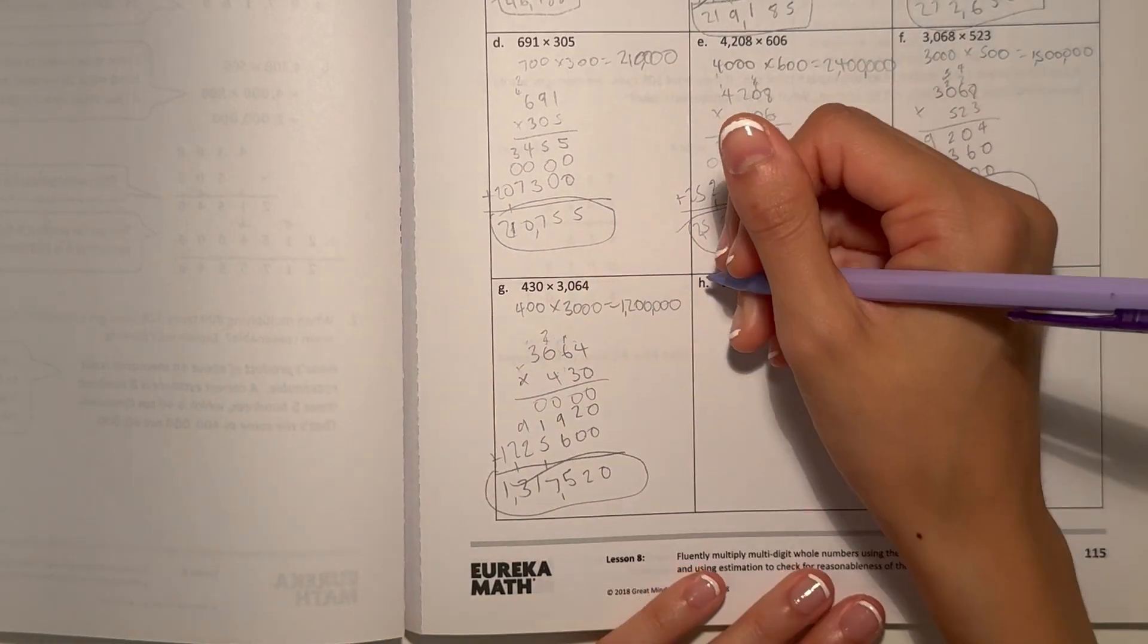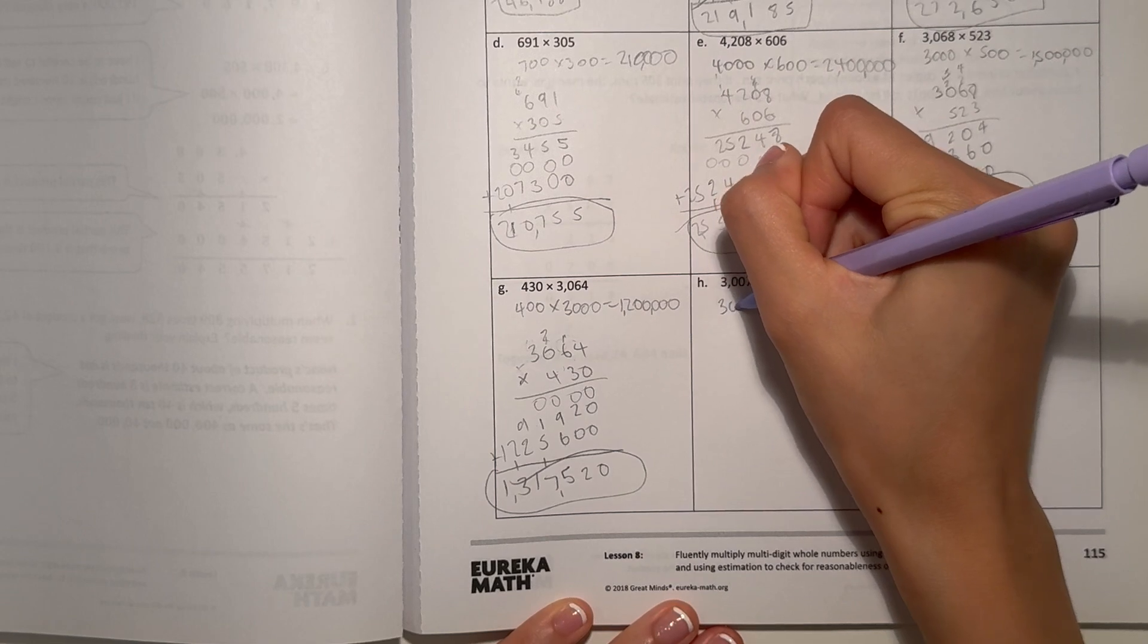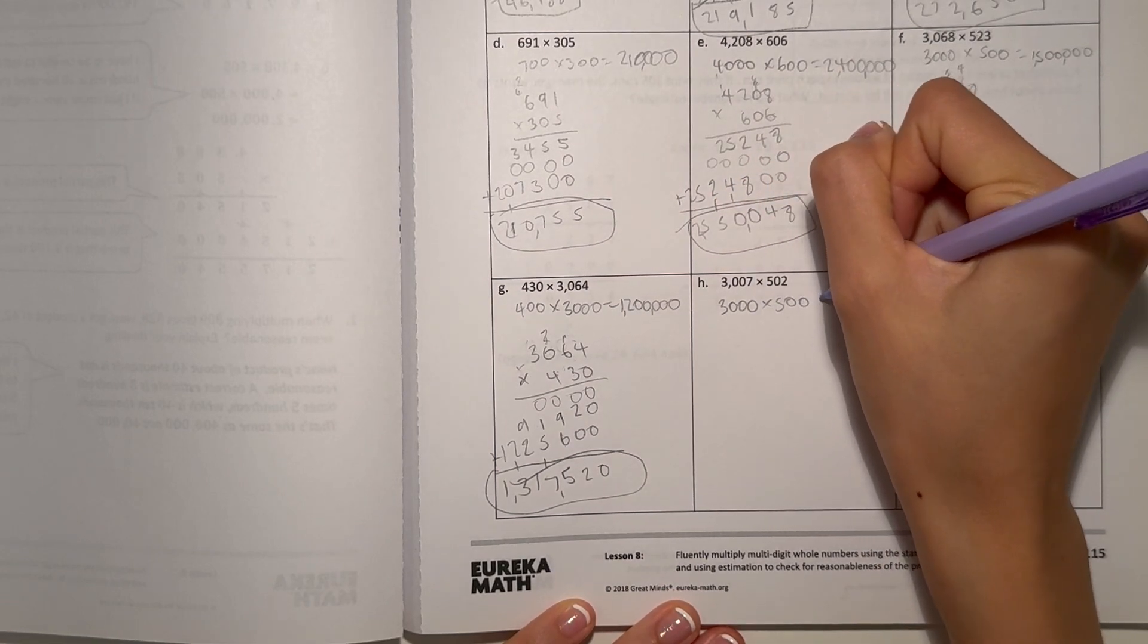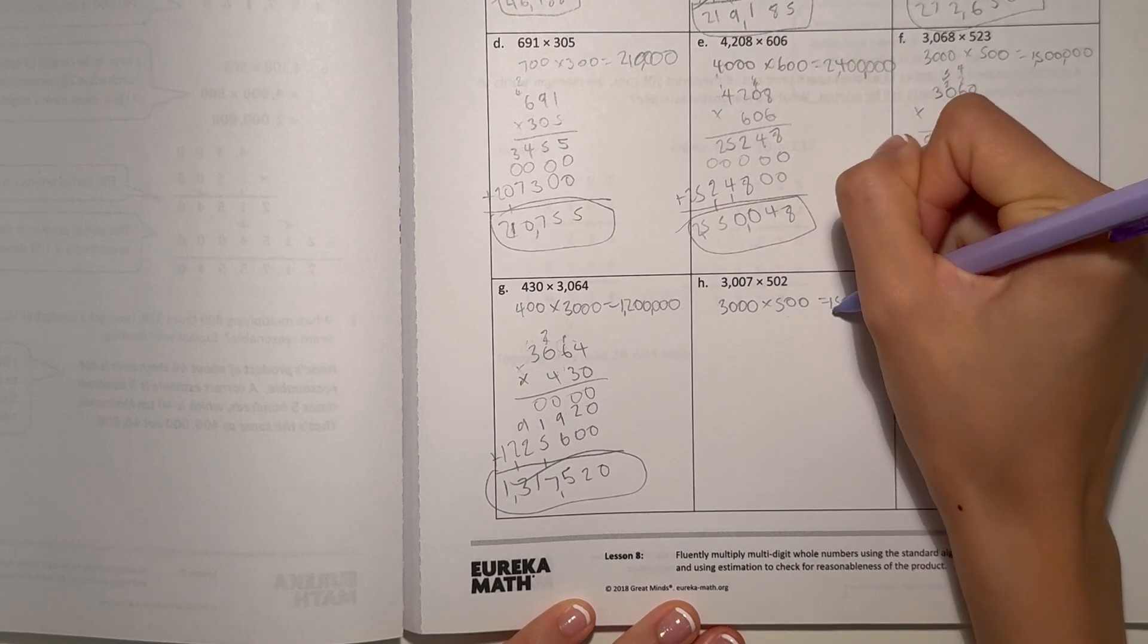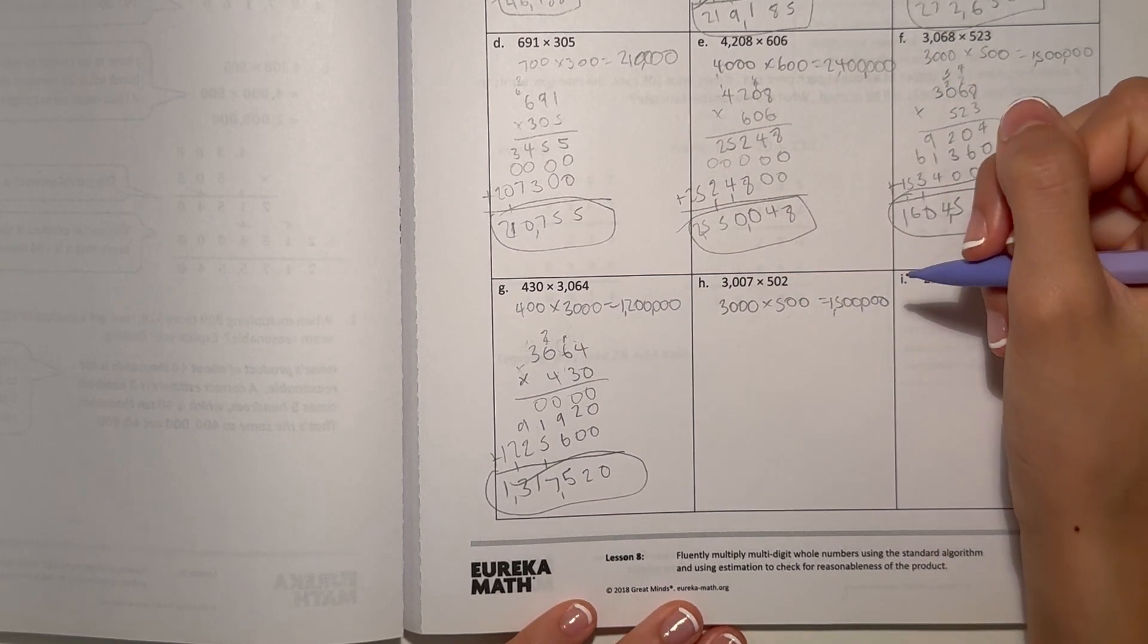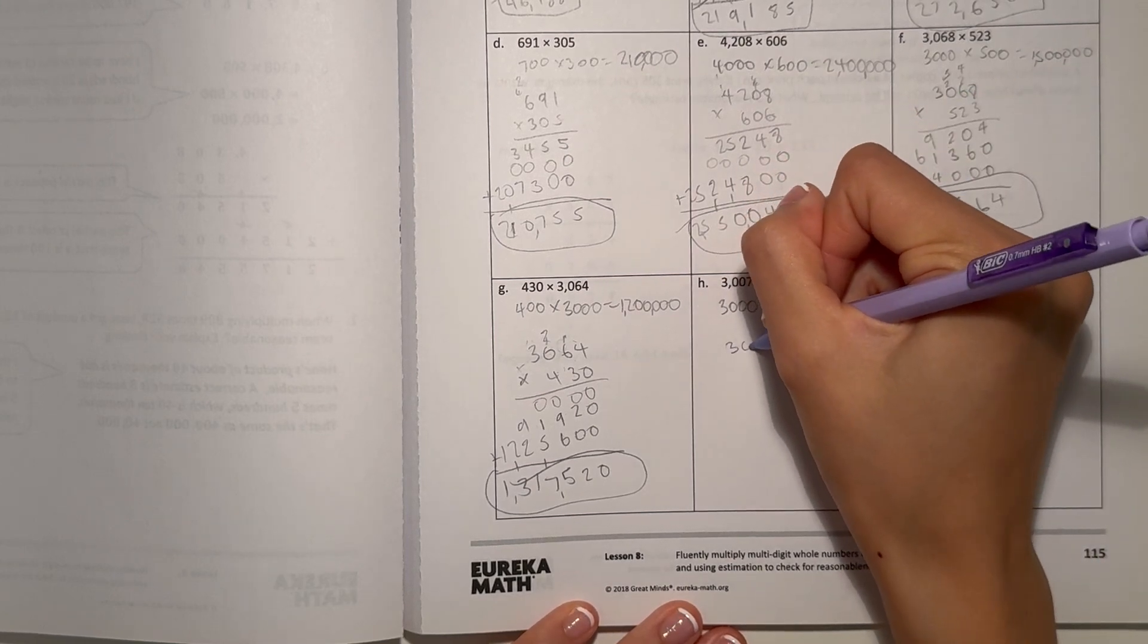Now H. 3,007, that's 3,000 times 500. 3 times 5 is 15. And add the zeros. Our estimate is 1,500,000. Now let's multiply.